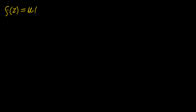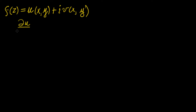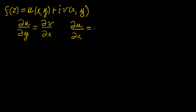In the last video we defined a function of a complex variable as f(z) = u(x,y) plus i times v(x,y), and we said that a function is analytic if it satisfies the Cauchy-Riemann equations. The Cauchy-Riemann equations state that the partial derivatives of u and v must satisfy certain relationships, with a minus sign on one side.